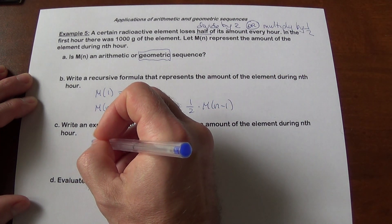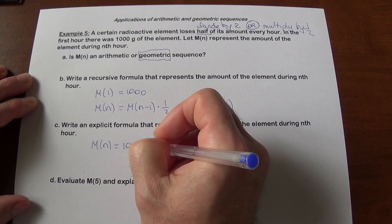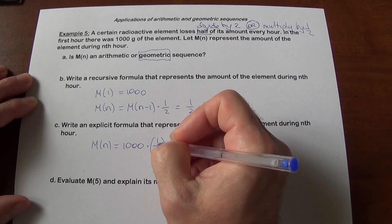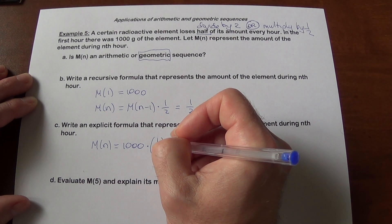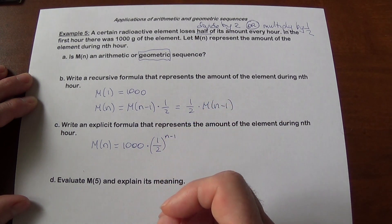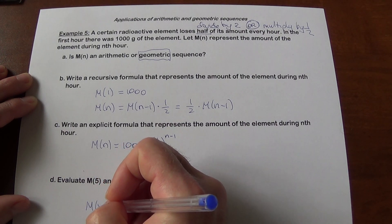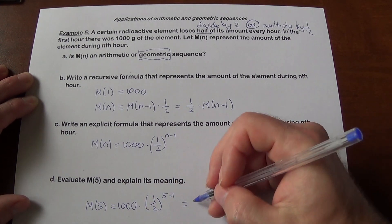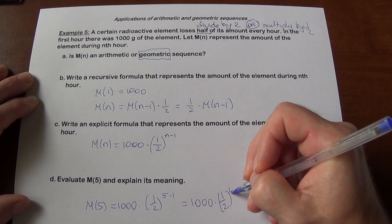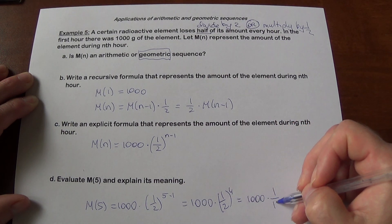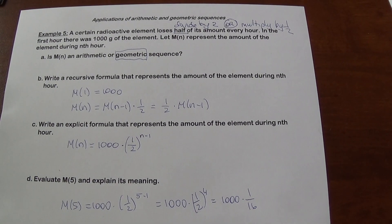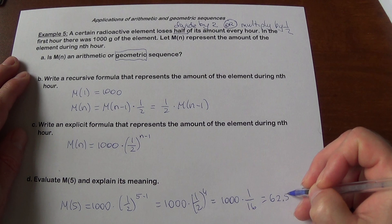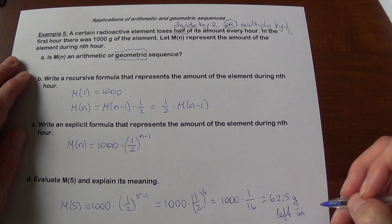The explicit formula is m of n equals 1000 times one half to the power of n minus 1, since decay starts in the second hour. Finding m of 5: 1000 times one half to the power of 5 minus 1, which is 1000 times one half to the fourth power, which is 1000 times 1 over 16, giving us 62.5 grams left after five hours.